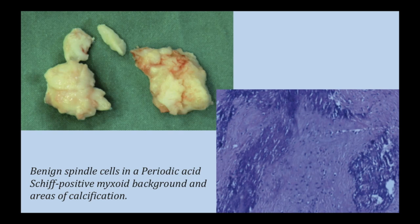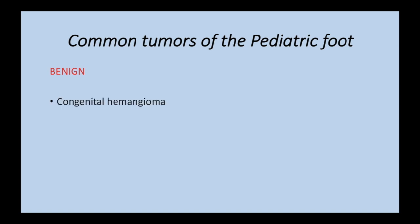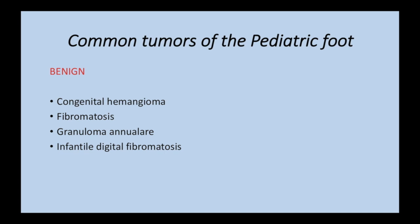Before we see the final pathology report, let us discuss the differential diagnosis for this tumor. The commonest tumors in this location in the benign category are congenital hemangioma and slow-flow vascular malformation — usually T2 hyperintense with multiple flow voids and well-defined calcifications like phleboliths, which does not fit our case. Fibromatosis is very much in consideration. Granuloma annulare is more of an inflammatory lesion in the subcutaneous plane and may not fit. Infantile digital fibromatosis is more distal, occurring in the toes and fingers.